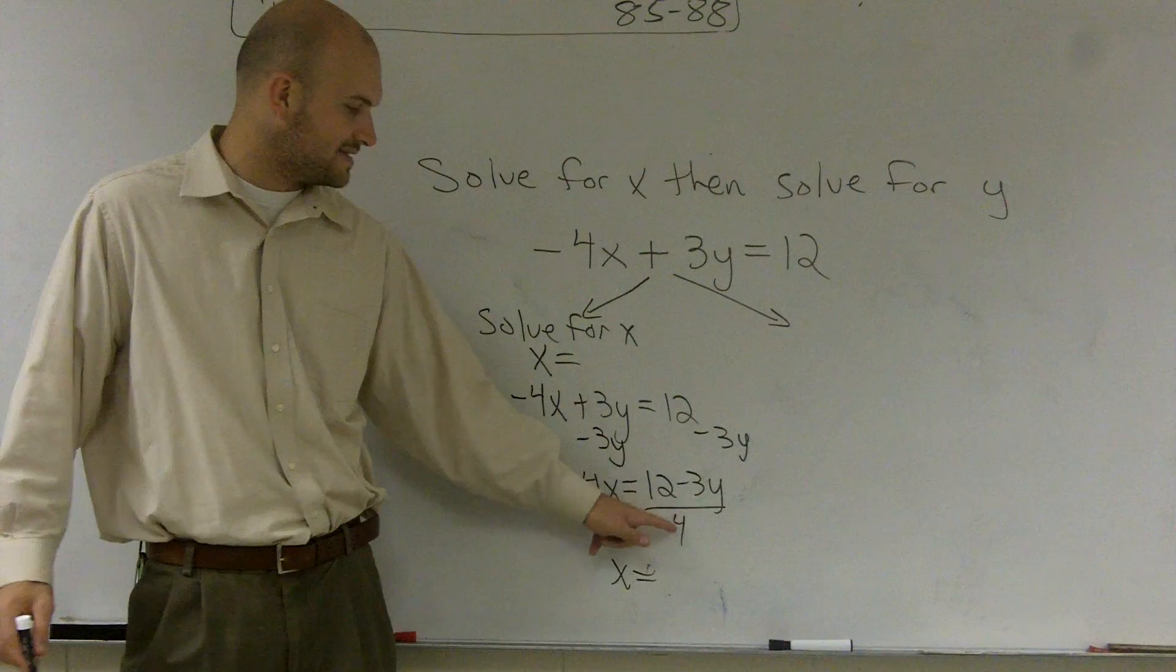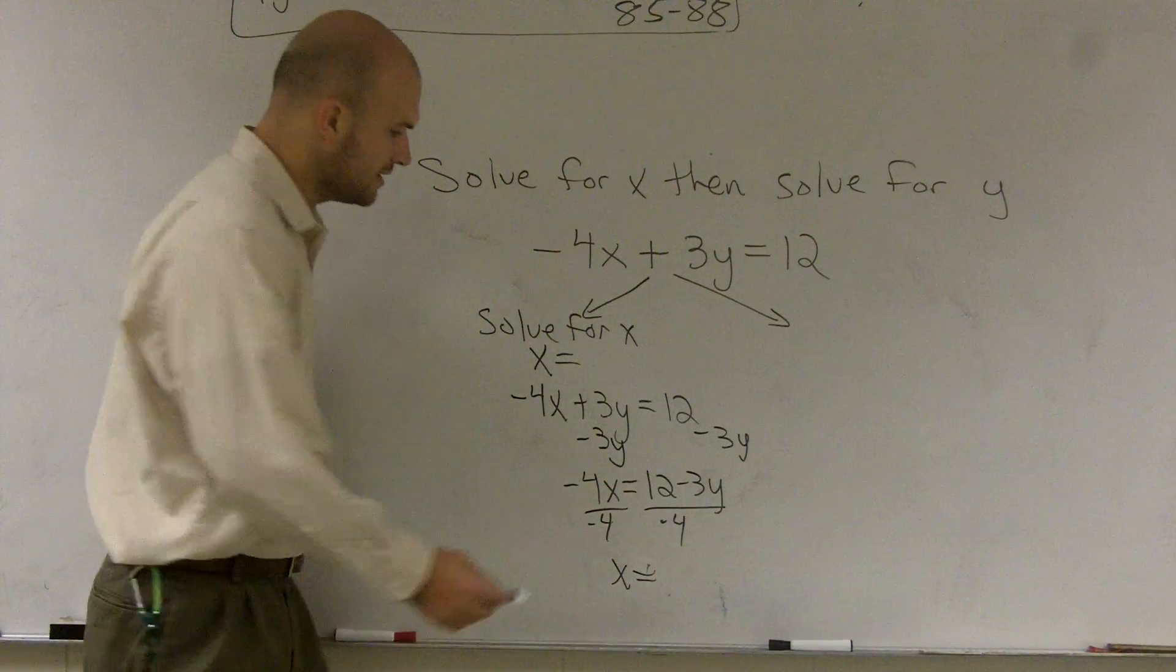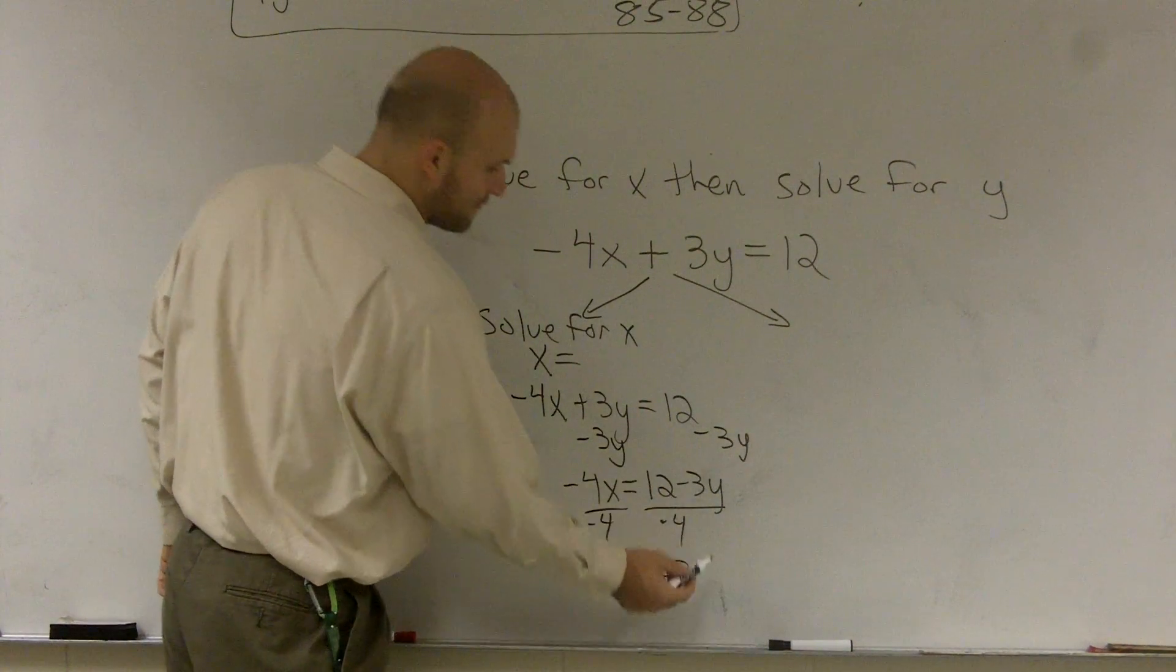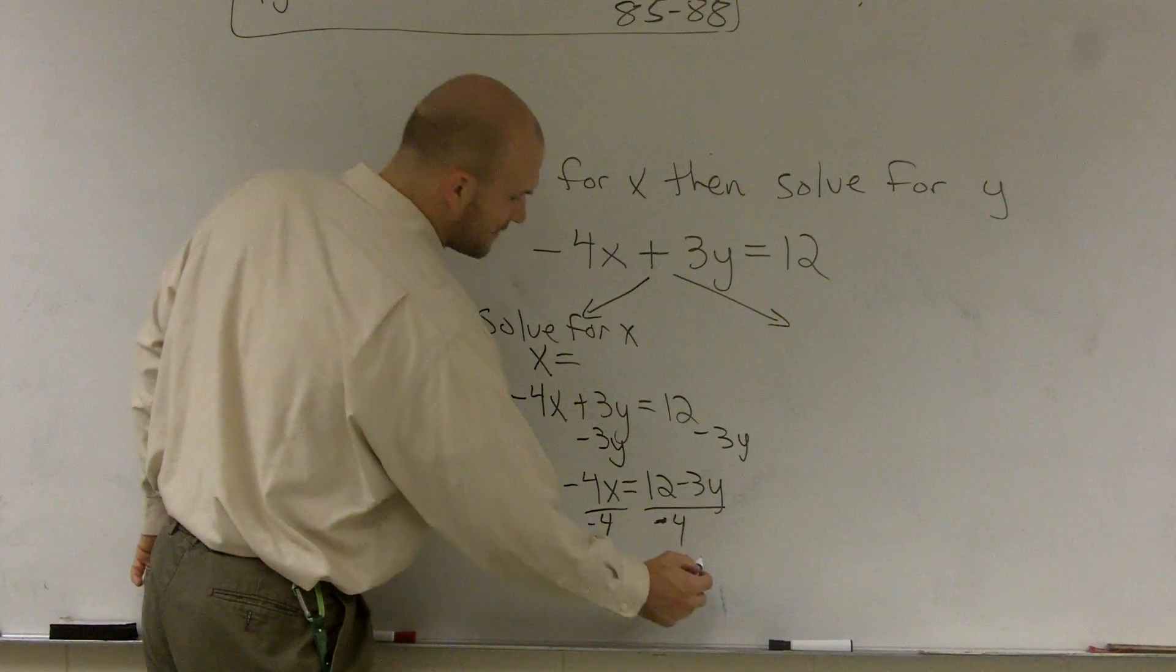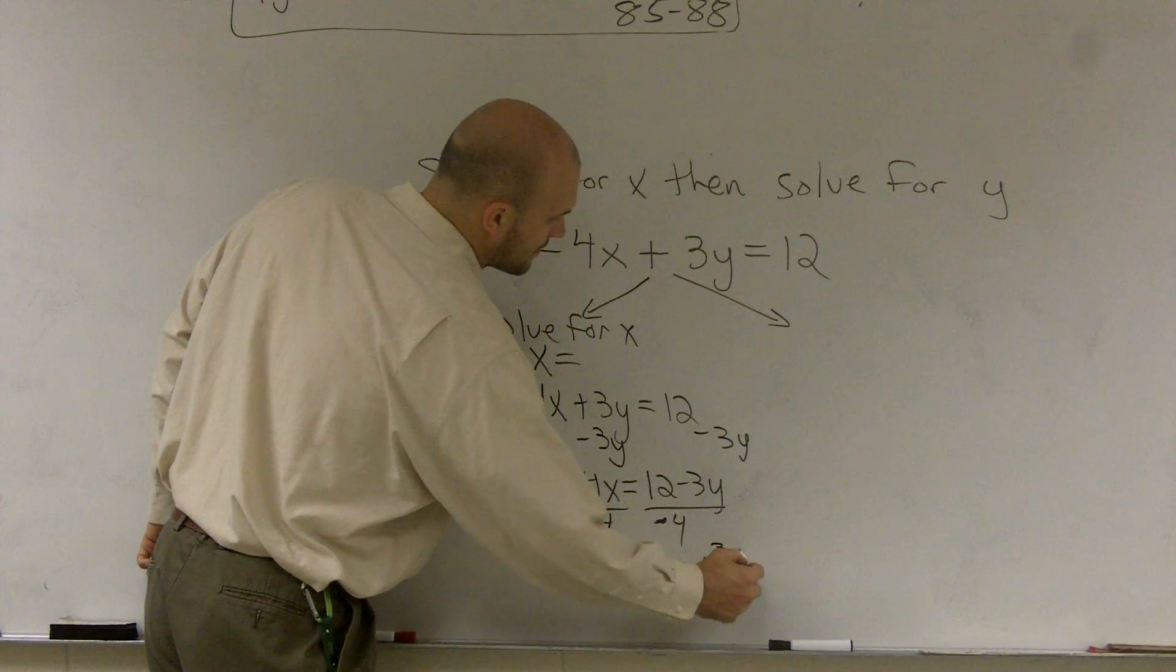Now, if you guys notice, I have to divide this negative 4. I can simplify this. 12 divided by negative 4 is going to give me a negative 3. And then negative 3y divided by negative 4 will give you a positive 3 fourths y.